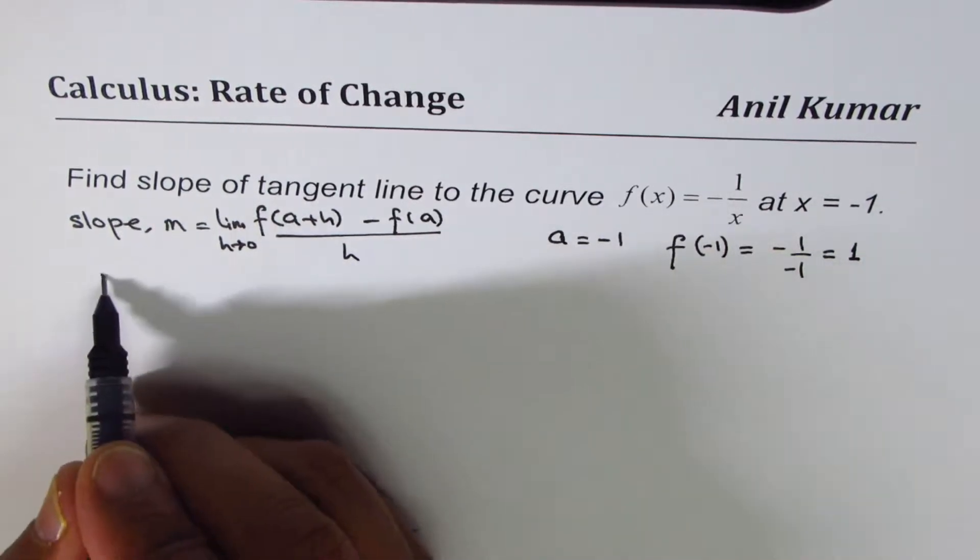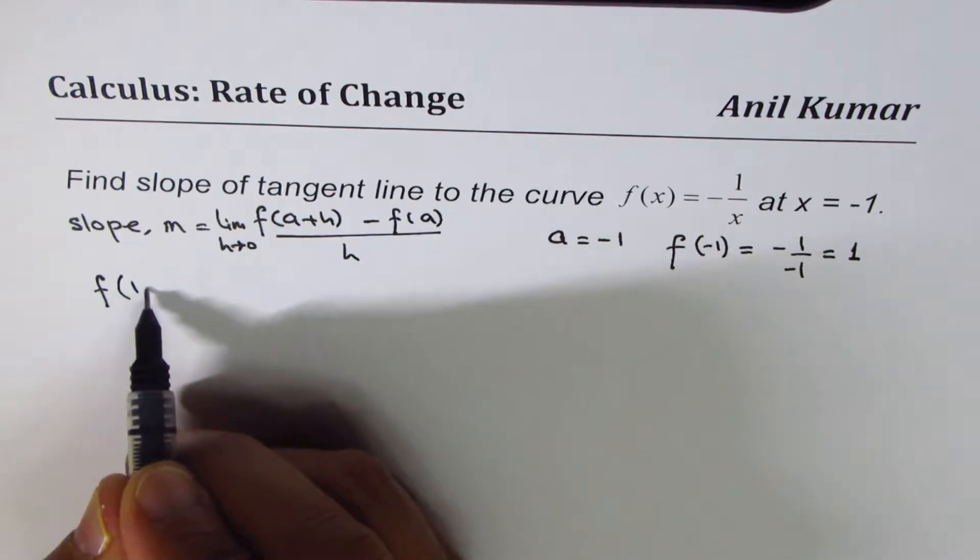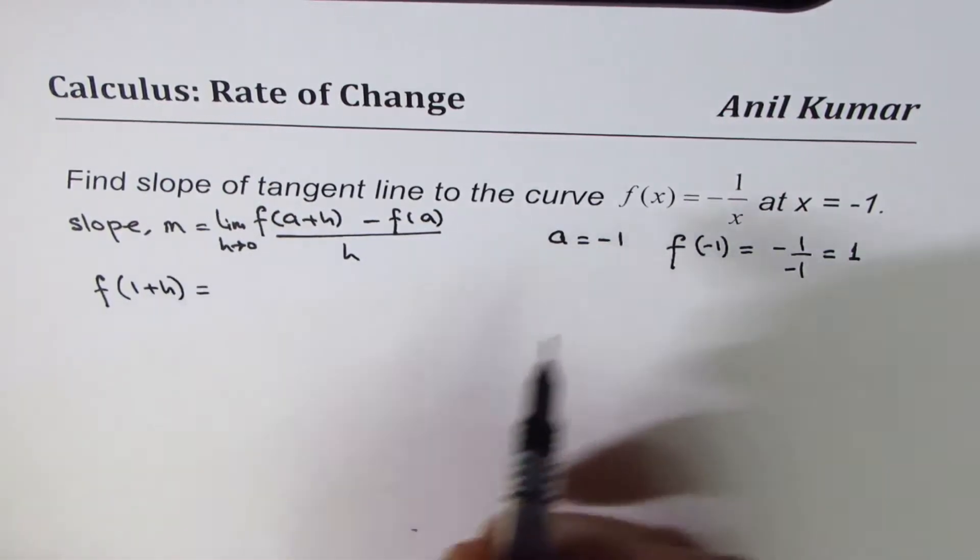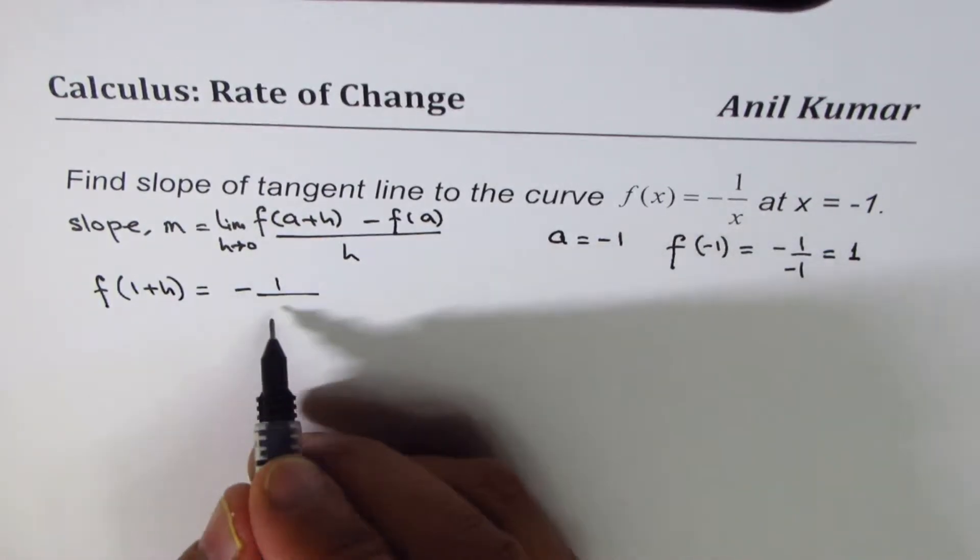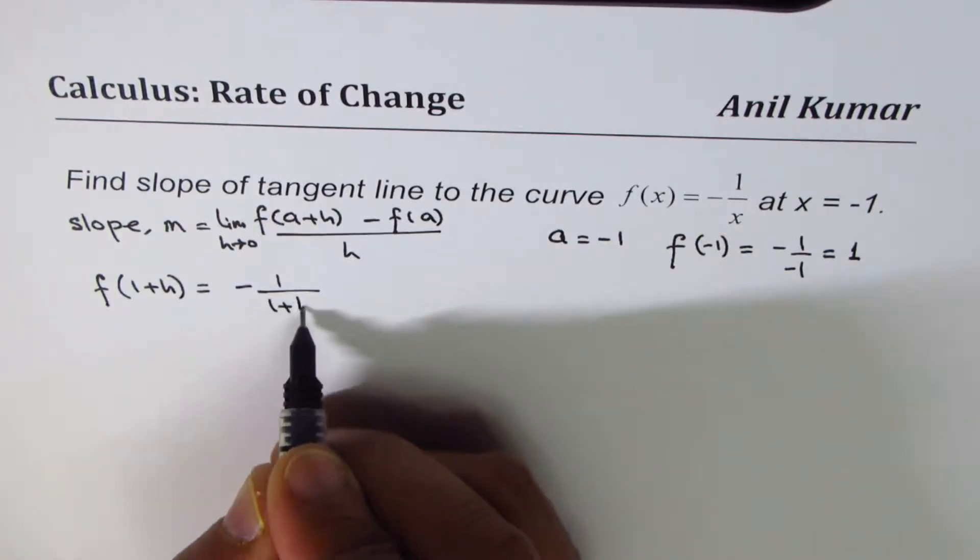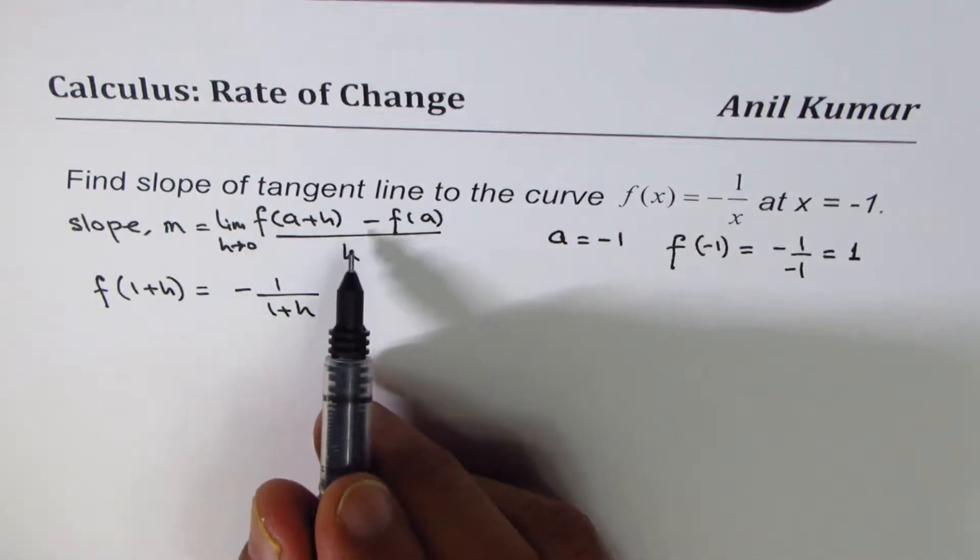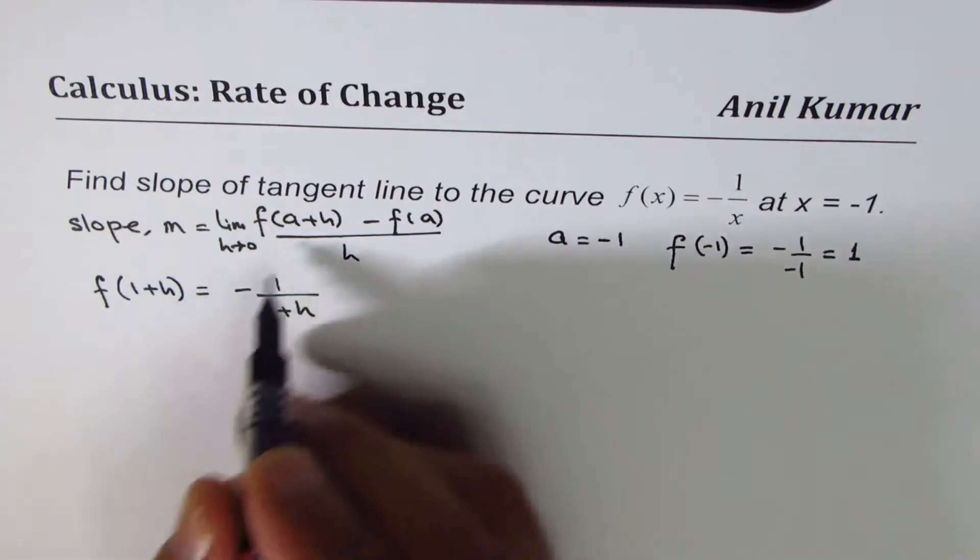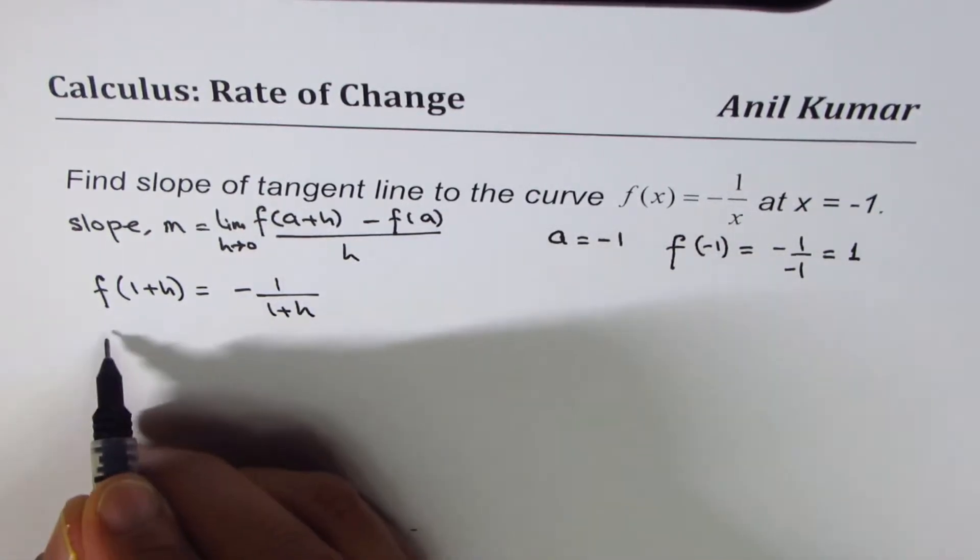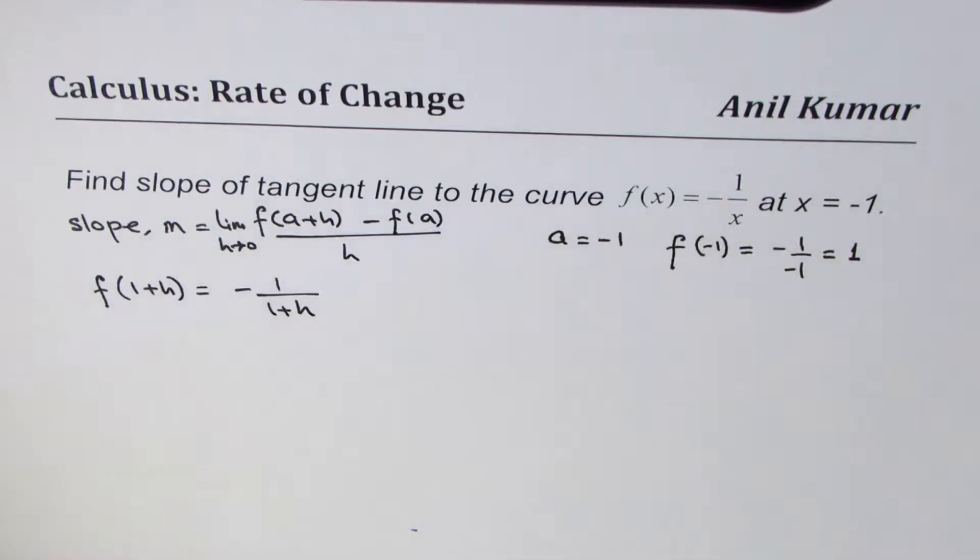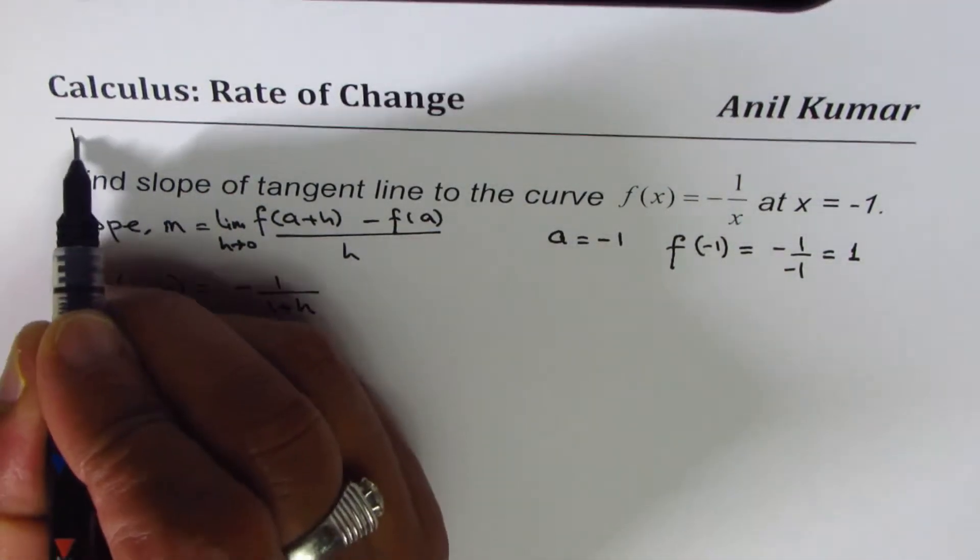Now let us also find the value of f(-1+h). So that should be minus 1 over, we'll replace x with -1+h. Now if you apply this formula, we could write slope, which is also called instantaneous rate of change. So we could write sometimes slope. In some books, we also find instantaneous rate of change.